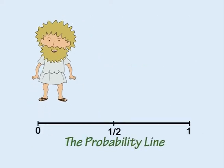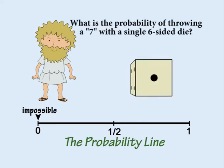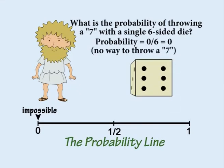The probability of an event happening can be shown on a probability line that runs from zero to one. Zero means impossibility. For example, what is the probability of throwing seven using a single six-sided die with faces numbered one to six? Zero, because none of the faces of the die are numbered seven.